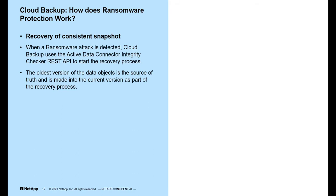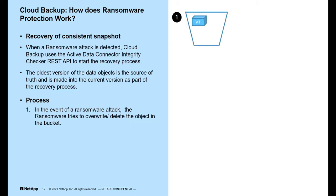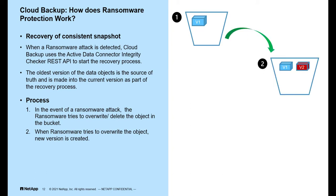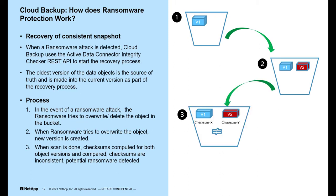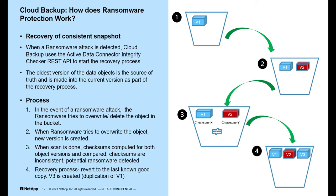Let's understand the recovery process. When a ransomware attack is detected, cloud backup uses the Active Data Connector Integrity Checker REST API to start recovery. In a ransomware attack, the ransomware tries to overwrite or delete the object in the bucket. When it overwrites the object, a new version is created. Checksums are computed for both object versions and compared. If the checksums are inconsistent, a potential ransomware attack is detected. For recovery, the system reverts to the last known good copy, and a version 3 is created which is an exact duplicate of version 1.